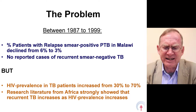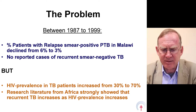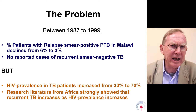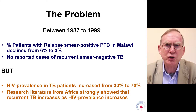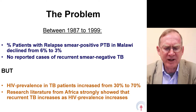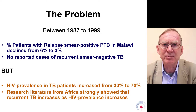Between 1987 and 1999, the proportion of patients registered nationally with relapse smear-positive pulmonary tuberculosis had declined from about 6% to 3%. And during these 12 years, there had never been any reported cases of recurrent smear-negative tuberculosis.